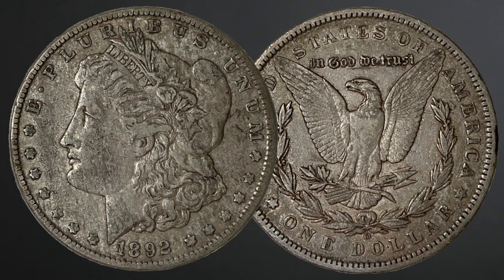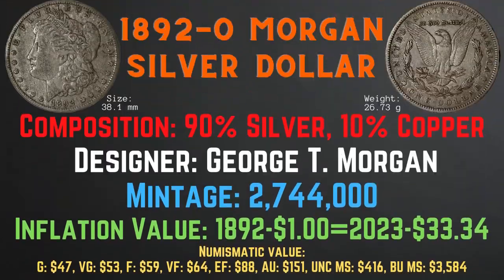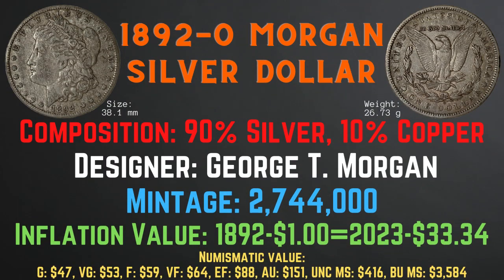Now let's take a look at the 1892-O Morgan silver dollar. It was minted in New Orleans and has a size of 38.1 millimeters and a weight of 26.73 grams. It has a composition of 90% silver and 10% copper. Its designer was George T. Morgan. Its mintage is 2,744,000. Its inflationary value for the year 1892 is $33.34. Its numismatic values range from $47 in good condition up to $3,584 in brilliant uncirculated mint state condition.